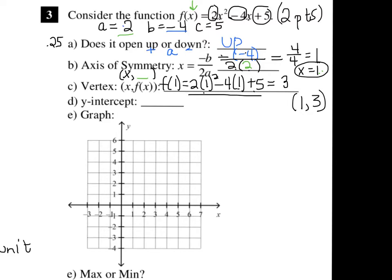I'm going to start sketching this on the graph. Through x equals 1 on the x-axis, I'm going to draw my vertical dashed line — there's the axis of symmetry. We now know that the vertex is 1 over and up 3. We do know this parabola will open up, but before we start drawing it, we're going to fill in the y-intercept. The y-intercept is whatever the number for C is, which is 5, so the parabola crosses the y-axis at 5. I'm going to make the mirror image of that point — since it's one space away from the axis of symmetry to the left, I'll make another point one space away to the right, and now I can connect those dots.